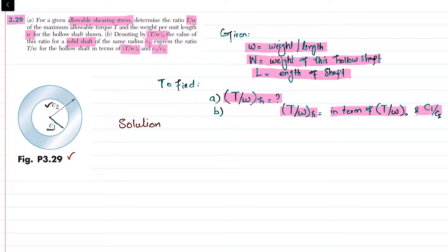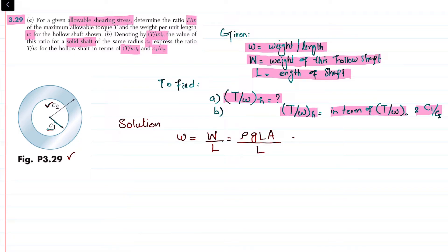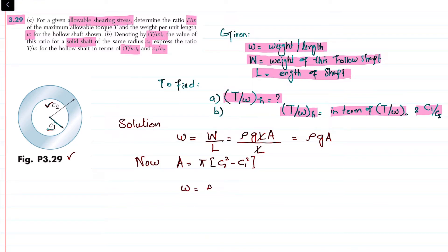Weight per unit length w equals capital W divided by L, where the weight of the hollow shaft equals ρgLA, with ρ being density, g acceleration due to gravity, L the length, and A the cross-sectional area. Dividing by L cancels it out, giving w = ρg·A. For this hollow pipe, A = π(c2² - c1²), so weight per unit length equals ρg·π·(c2² - c1²).